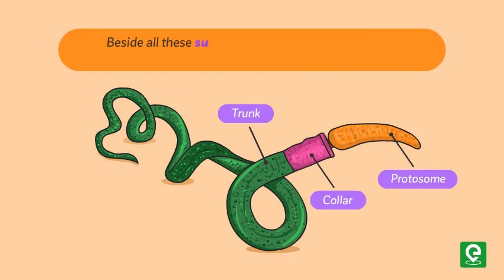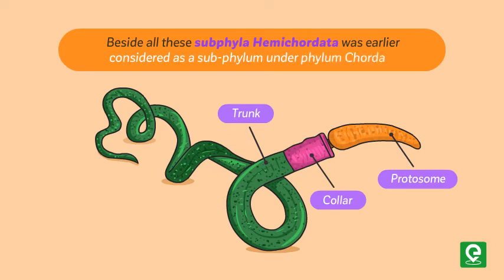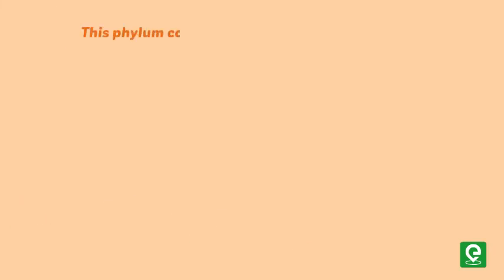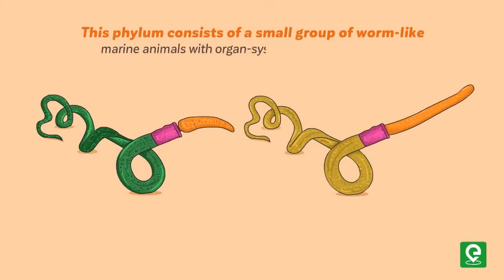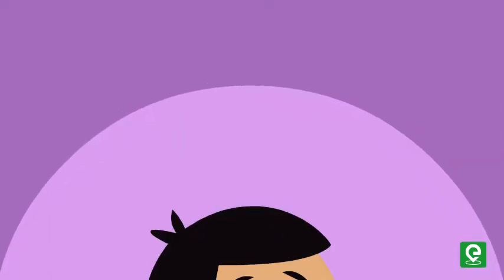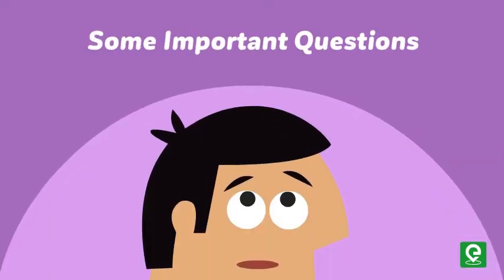Besides these sub-phyla, hemichordata was earlier considered as a sub-phylum under phylum chordata, but now it is placed as a separate phylum under non-chordata. This phylum consists of a small group of worm-like marine animals with organ system level of organization. Examples: Balanoglossus and Saccoglossus.